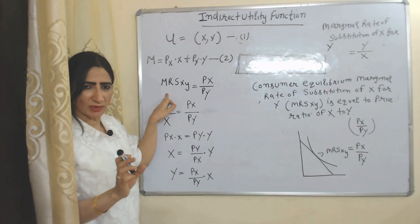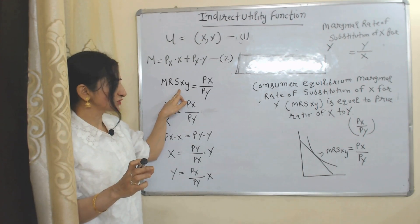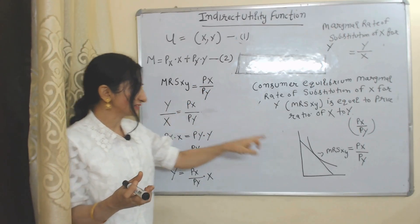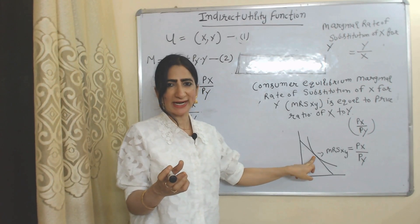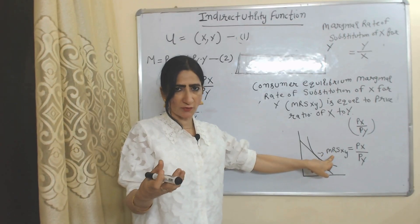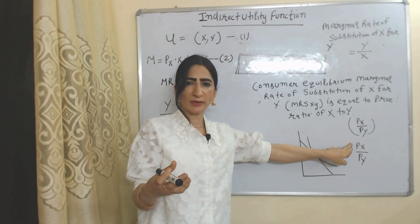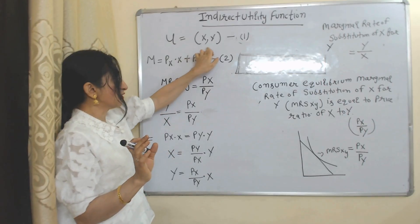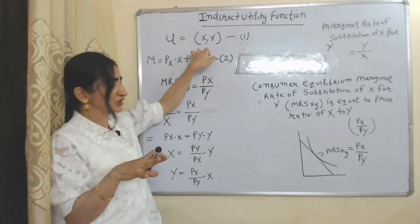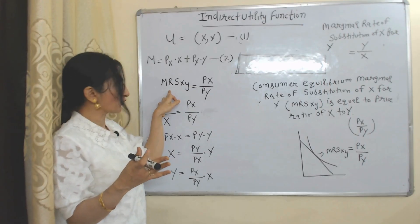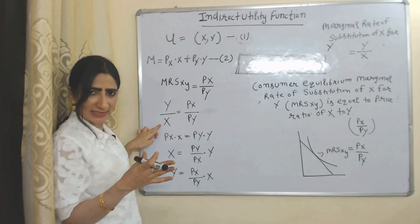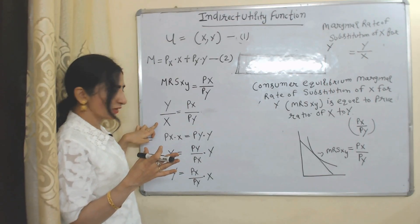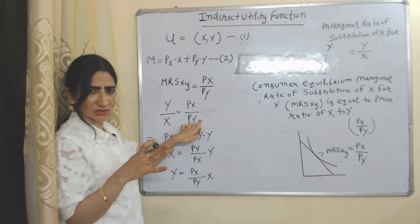At the consumer equilibrium point, marginal rate of substitution of X for Y is equal to the price ratio of X to Y. As we know for this utility function, the marginal rate of substitution of X for Y is equal to Y over X. That is why in place of MRS of X for Y, we will put Y over X, and this is the price ratio X to Y.